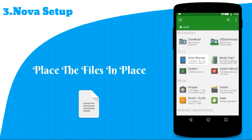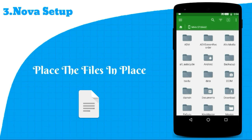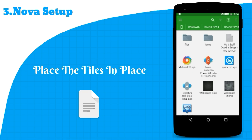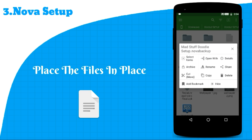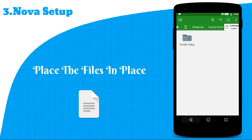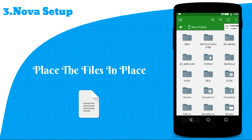Now we have to place the files at their appropriate places. First, copy the match top doodle backup file into the Nova Data folder in main memory, which has one folder — open it — which again has one folder named as backup, and paste the copied file in that.